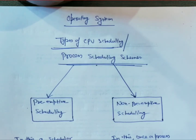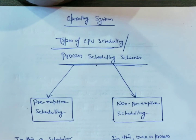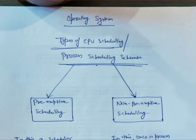When a process comes to the CPU and then comes to the main memory, that is preemptive scheduling. If a process does not go — that is not preemptive scheduling. Let me explain the definitions of both for you.